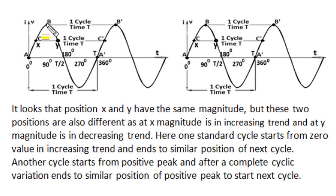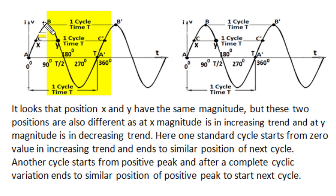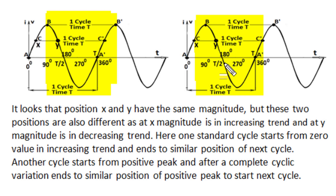A cycle can also be defined starting from any instant, say from a positive peak. The unique non-repetitive set of values again reaches the same identical position as at the start, and then repetition takes place. So from positive peak B to the next positive peak, that is again one cycle. Similarly, from point C to C-dash, the instantaneous conditions are the same and in between there is a complete cycle. The time period is the same whether measured from positive peak to next positive peak or from C to C-dash.